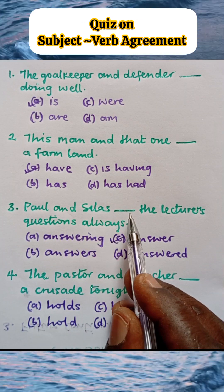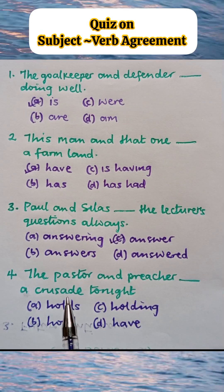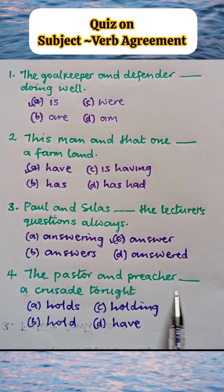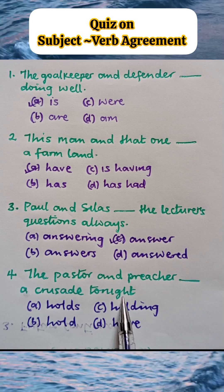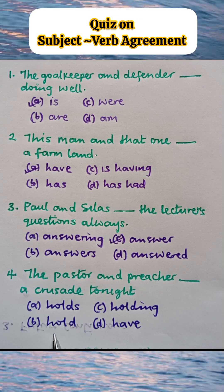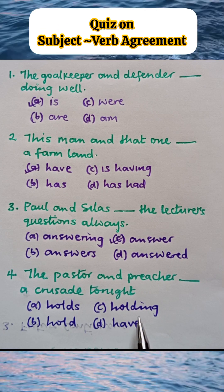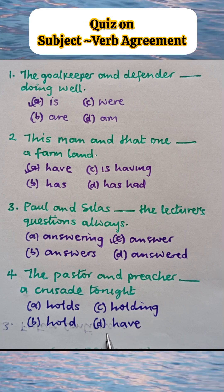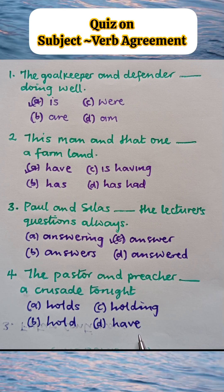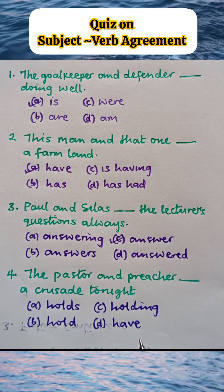And finally, number four: the pastor and preacher blank a crusade tonight. A - holds a crusade tonight, B - hold a crusade tonight, C - holding a crusade tonight, D - have a crusade tonight. You answer this — put your answer in the comment section. Thank you very much for watching.